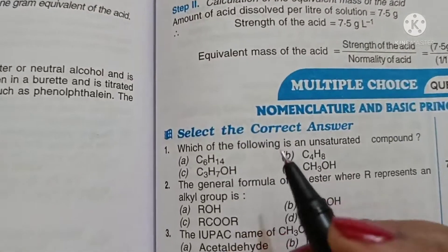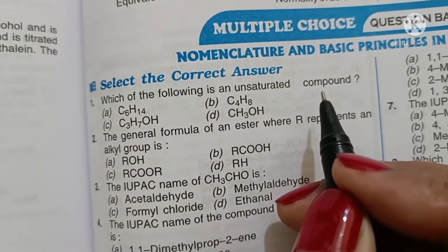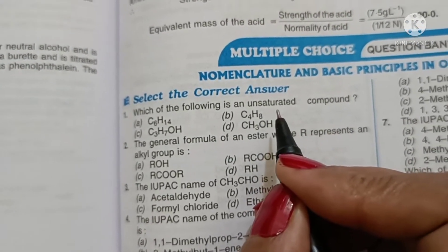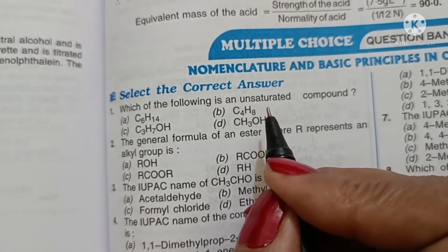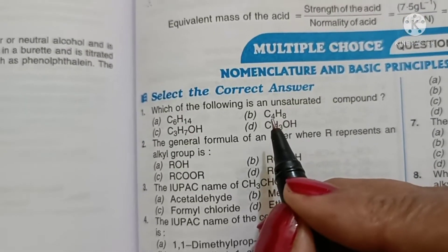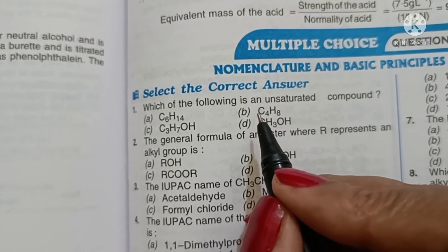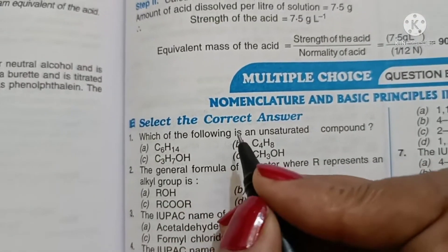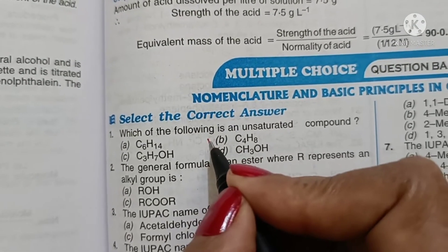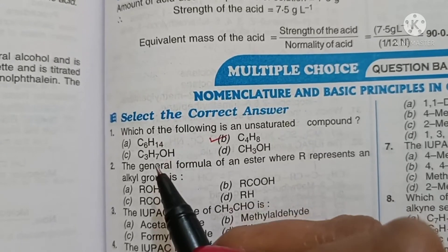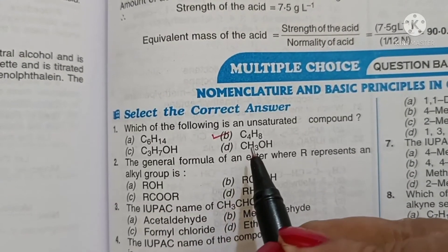Which of the following is an unsaturated compound? An unsaturated compound should have a double bond and general formula CnH2n or CnH2n minus 2. This is an alkene, alkene, alcohol, alcohol. So option B is the correct answer.